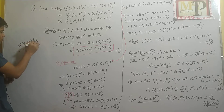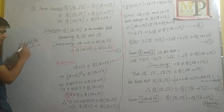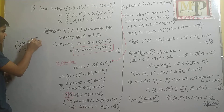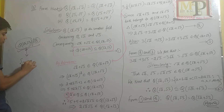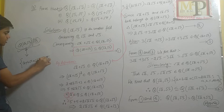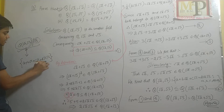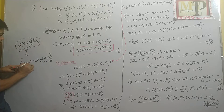Q(√2, √3) का मतलब यह है कि यह एक extension field है over Q. इसमें जो general element होगा वो A + B√2 + C√3 + D√2·√3 type का होगा, जहाँ A, B, C, D belongs to Q.